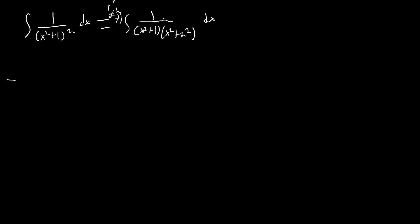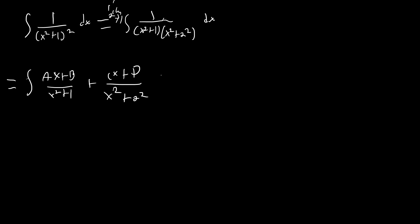Let's go ahead and do partial fractions. I'm going to solve the integral first and then take the limit as a goes to 1. We're going to have the integral of (Ax + B)/(x² + 1) plus (Cx + D)/(x² + a²) dx. Now we'll make a system of equations. Looking at the x³ terms, that gives A + C = 0. Looking at the x² terms, that gives B + D = 0.